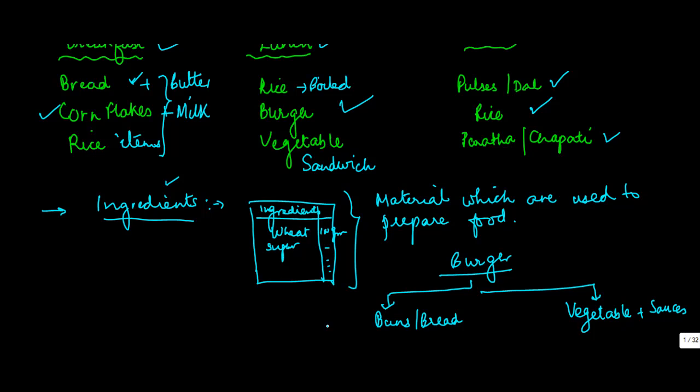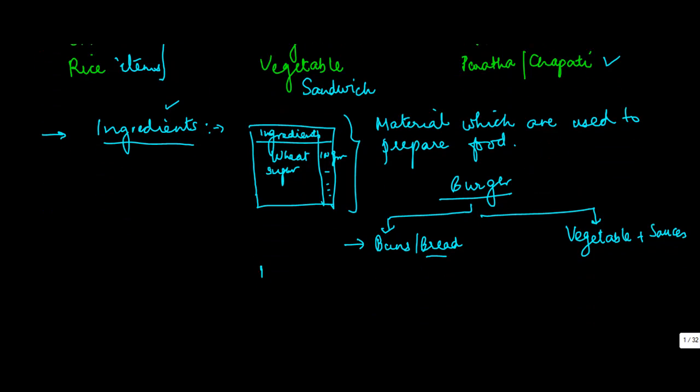Now the material, the ingredients of a burger, are basically the buns. Now bun is made of what? Bun is made of wheat. Plus there might be an egg coating on it, so egg.